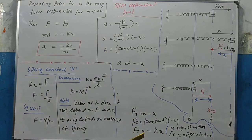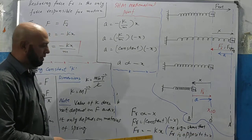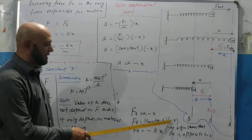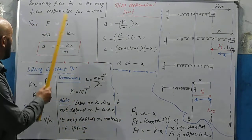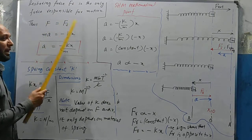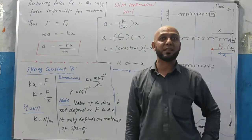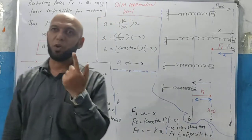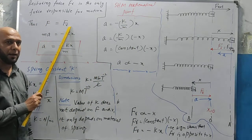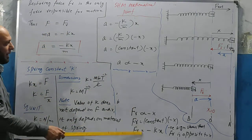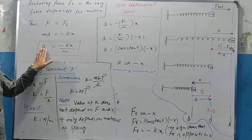The negative sign shows that the restoring force is opposite to x. The minus sign is with x. Now, the restoring force is the only force causing motion. To find acceleration, we need the total force, which equals the restoring force. So total force = ma = −kx.